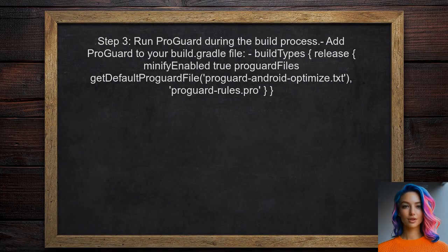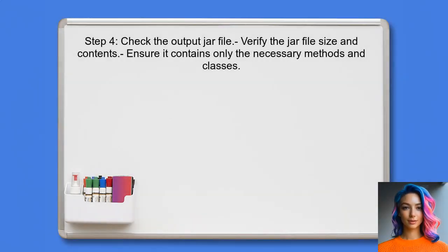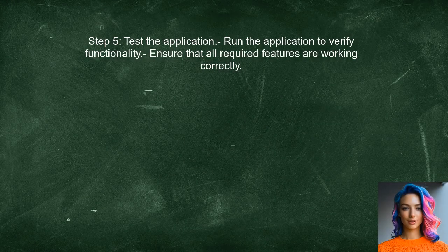After setting up the configuration, run the ProGuard tool during the build process. This can typically be done by adding it to the build.gradle file if using Gradle. Once ProGuard has been executed, check the output jar file — it should now contain only the necessary methods and classes, significantly reducing its size. Finally, test your application thoroughly to ensure that no essential functionality has been removed during the shrinking process.